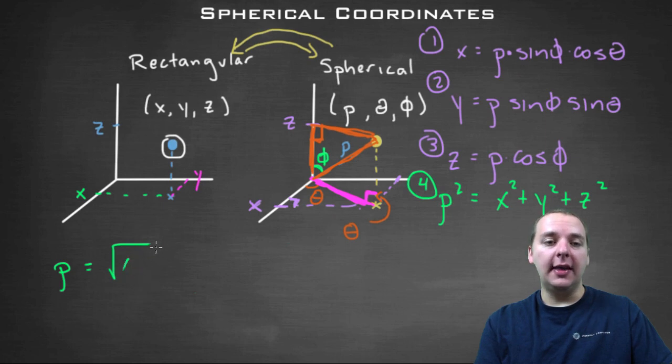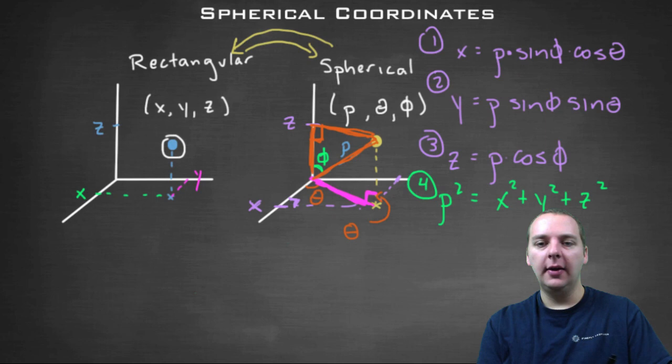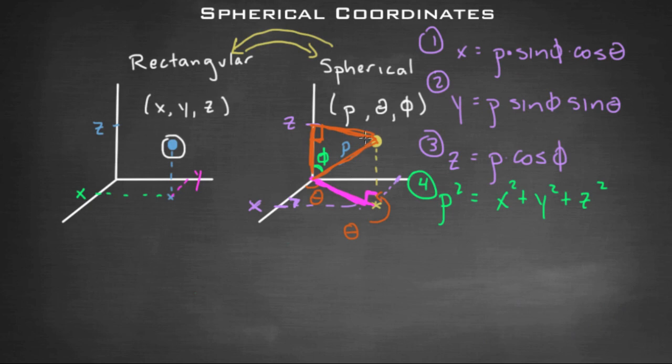Get rid of this real quick. Alright, now the theta's an easy one actually. Thankfully we finally get a little break. The theta, we can solve for theta the same way we did in cylindrical form because that theta's the same as this theta. So we're just going to cheat a little bit for this one. Do you remember how tan theta was y over x?